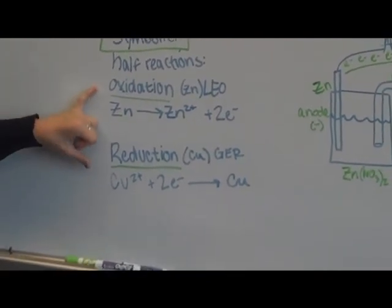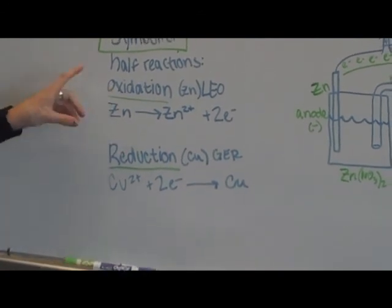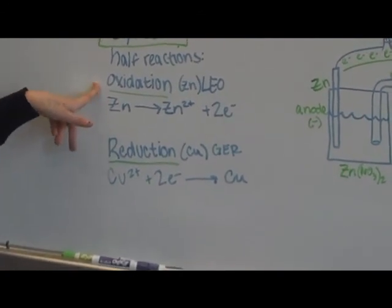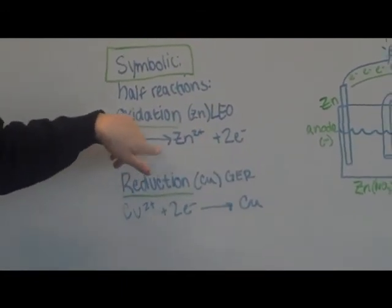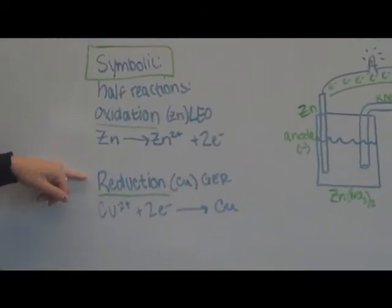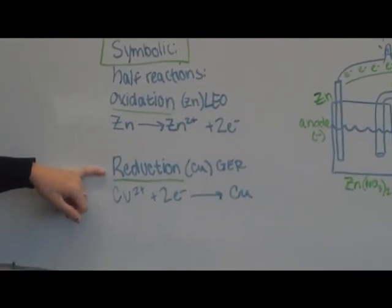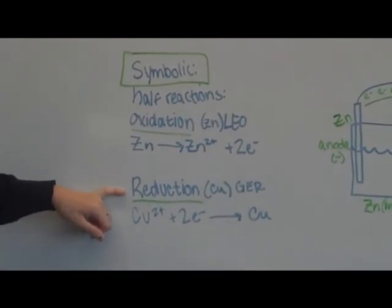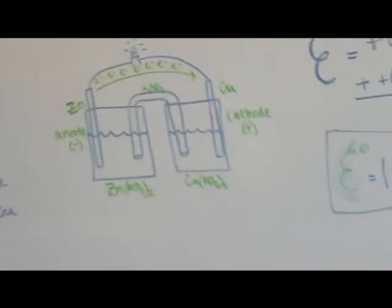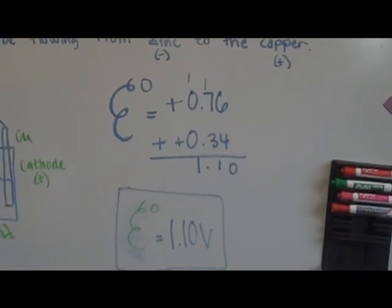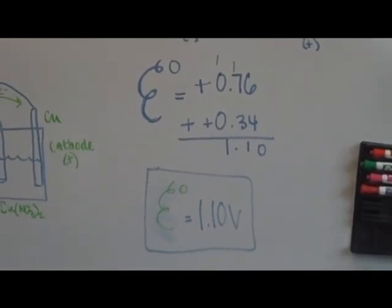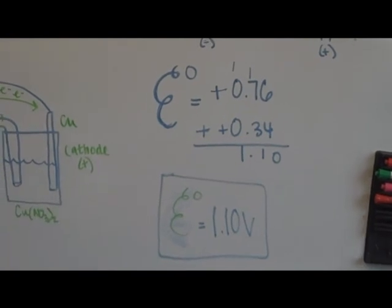The symbolic piece of this part of our Rube Goldberg is we did half reactions. We did the oxidation part and the reduction part. Zinc is being oxidized because it's losing electrons—this is its equation, zinc to zinc 2+. The reduction is of copper because copper is gaining electrons. The voltage of our reaction to light the LED was 1.10 volts.